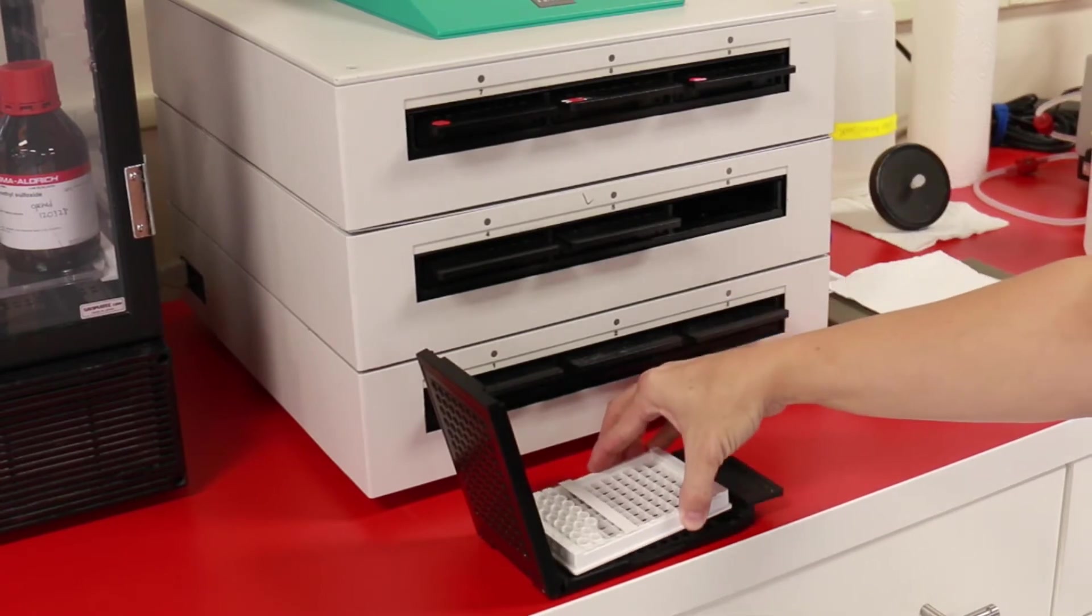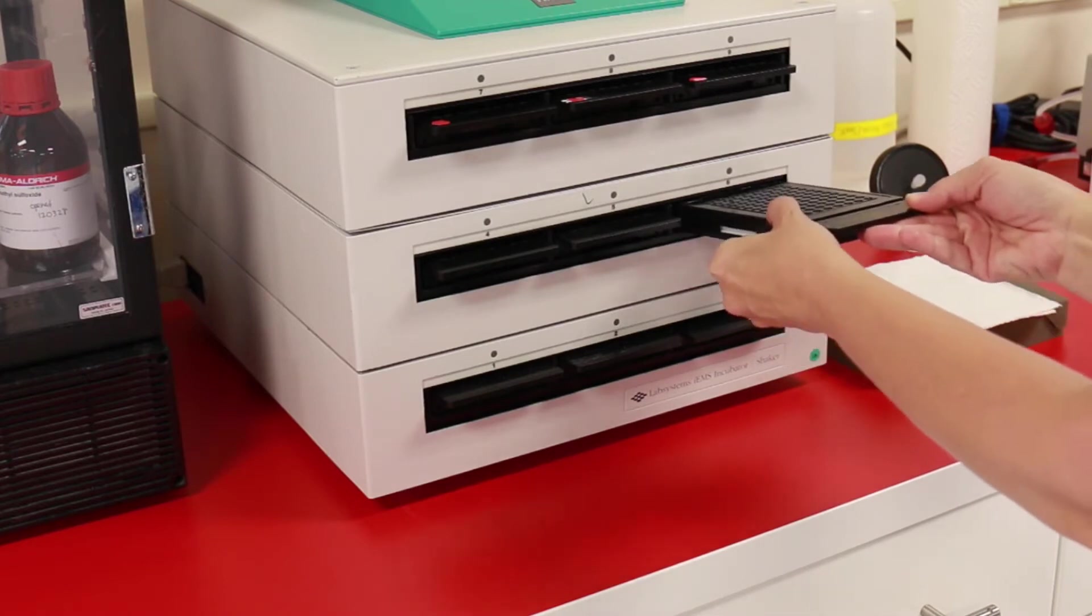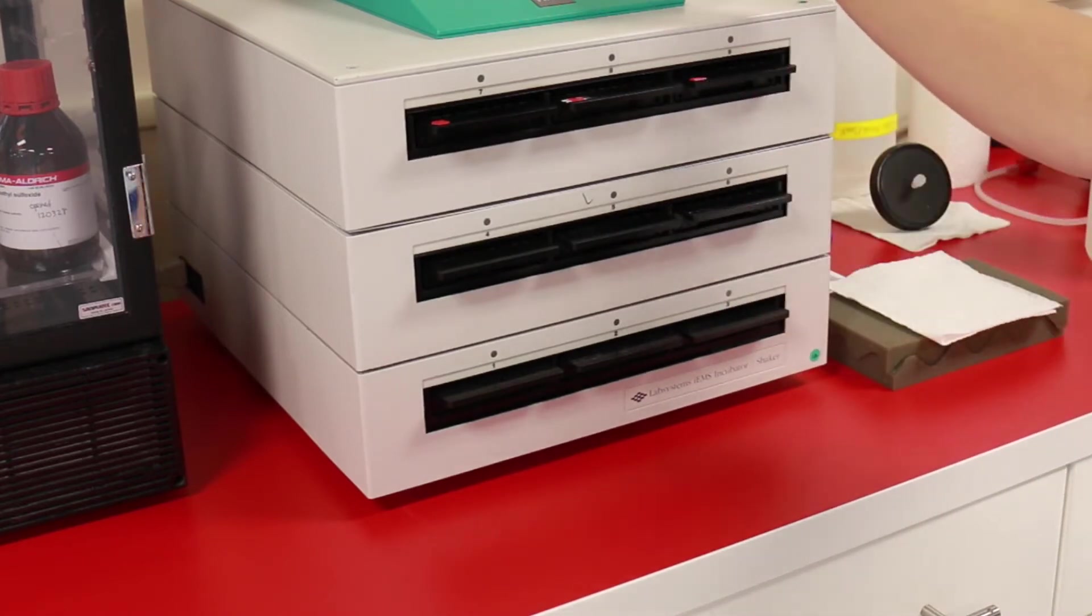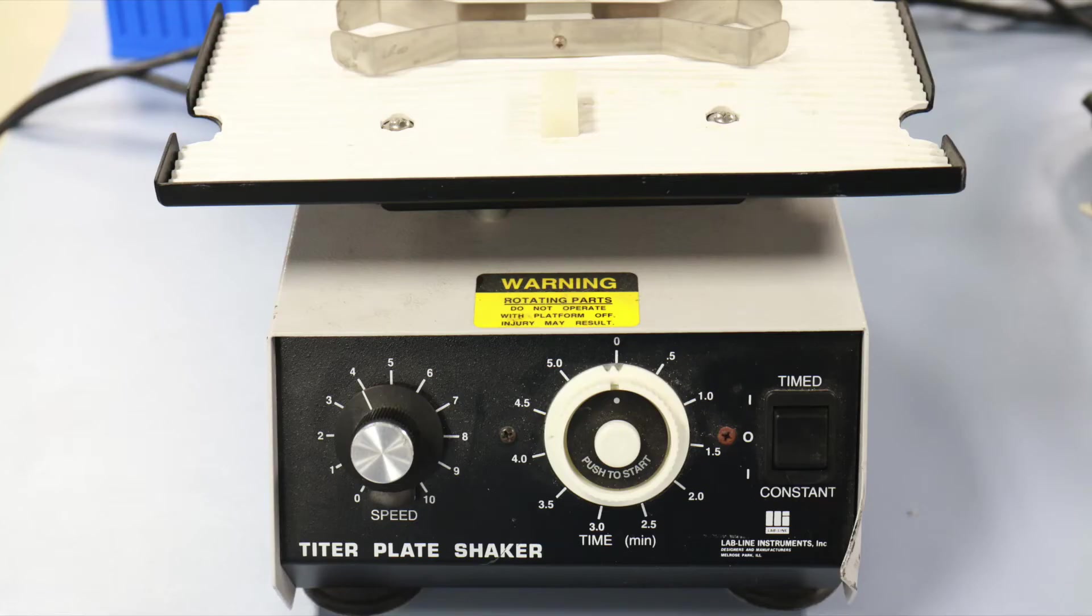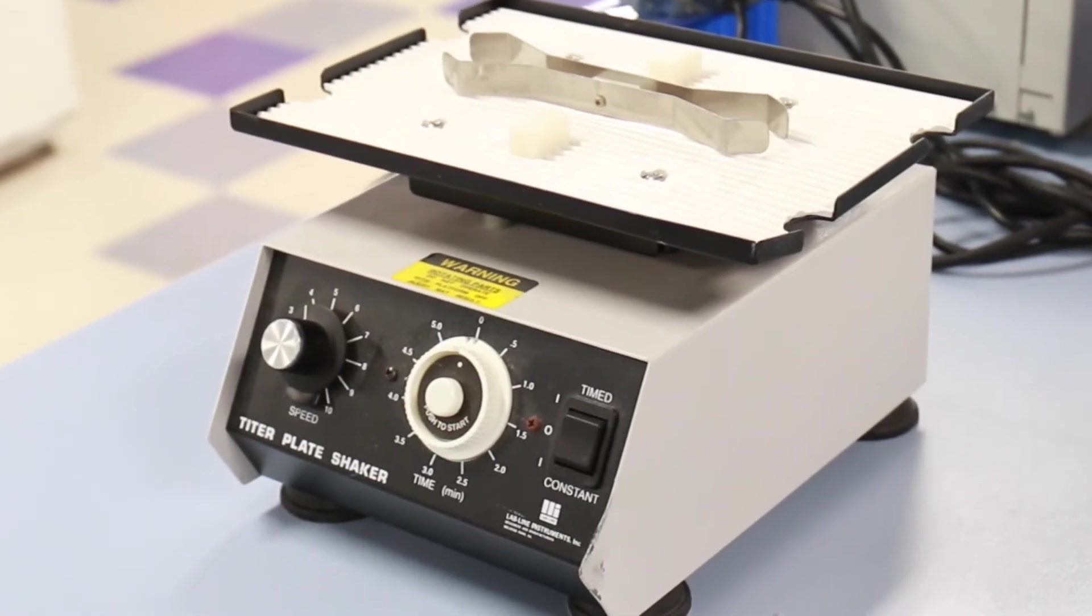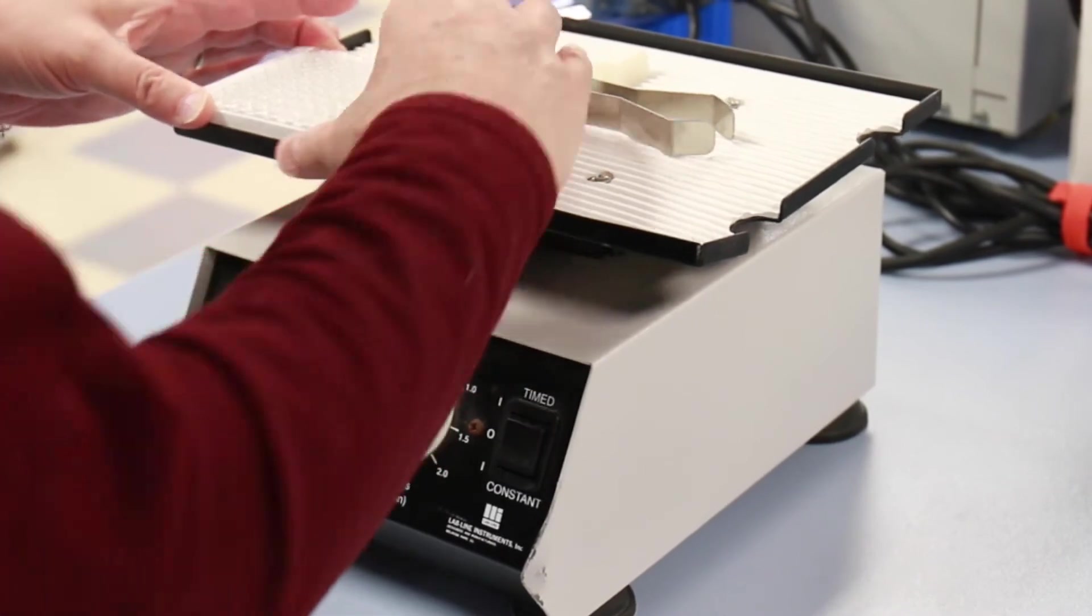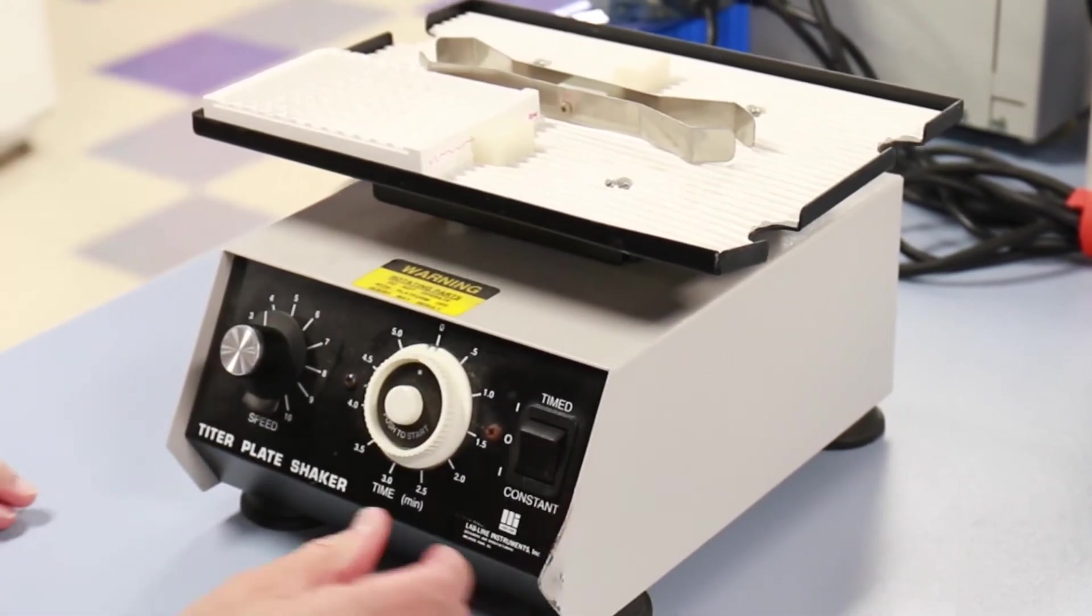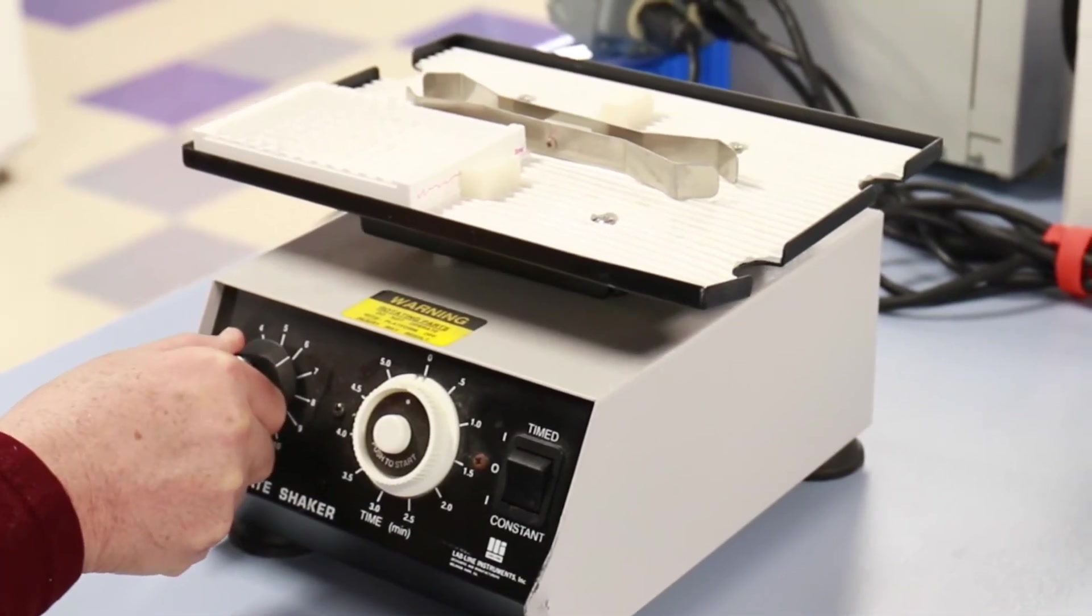If the protocol requires shaking, use a plate shaker that will ensure thorough mixing of the well reagents. Put the plate on a plate shaker or orbital shaker. Shaking the plates will speed up the reaction taking place in the wells. Shake the plate so that the well contents move, but do not shake too rapidly to lose the contents of the wells.